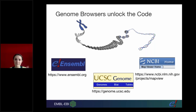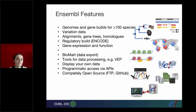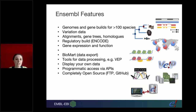The major genome browsers out there are Ensembl and UCSC, and NCBI have a couple as well. Ensembl has loads of data - we have genomes with gene builds, which is basically all of the genes plotted onto the genome, for over a hundred species. We have variation data, which we'll look at when we explore linkage disequilibrium today. We also have comparative genomics data including alignments, gene trees, homologues, and a regulatory build incorporating data from sources such as ENCODE, alongside gene expression and functional data.